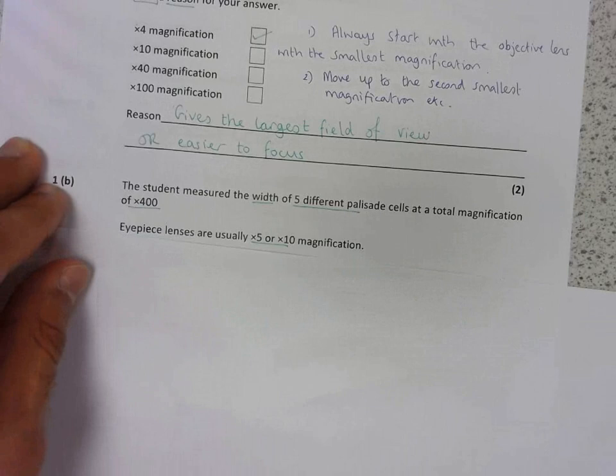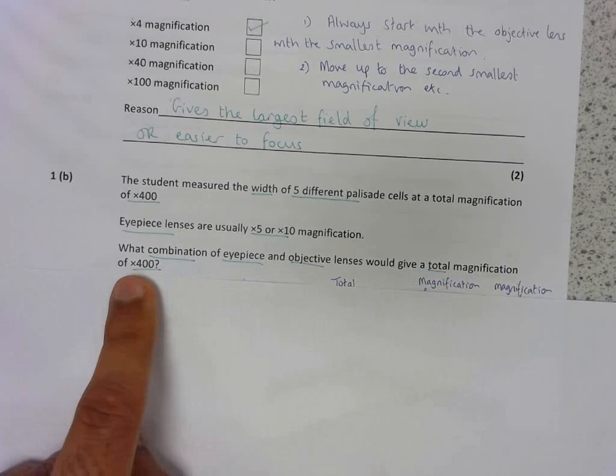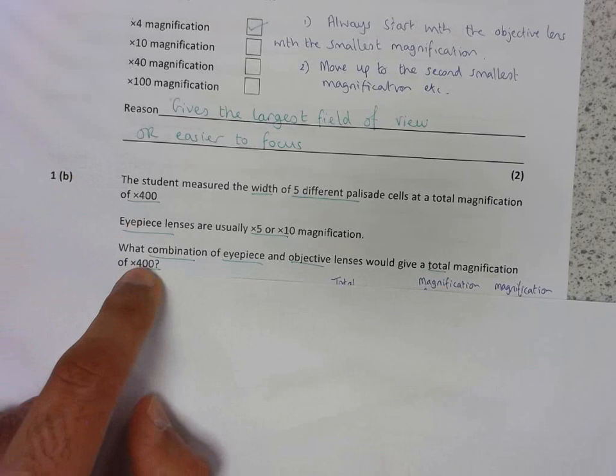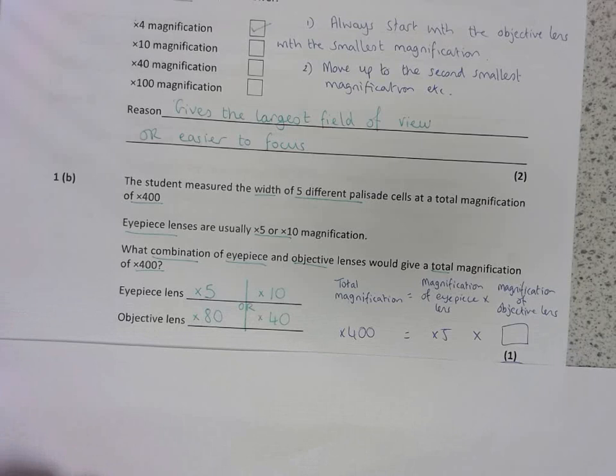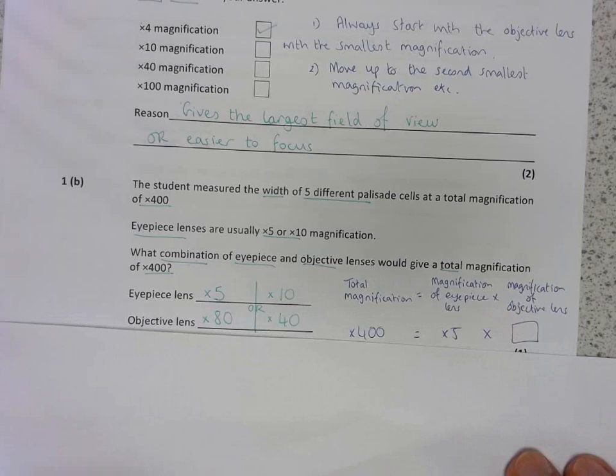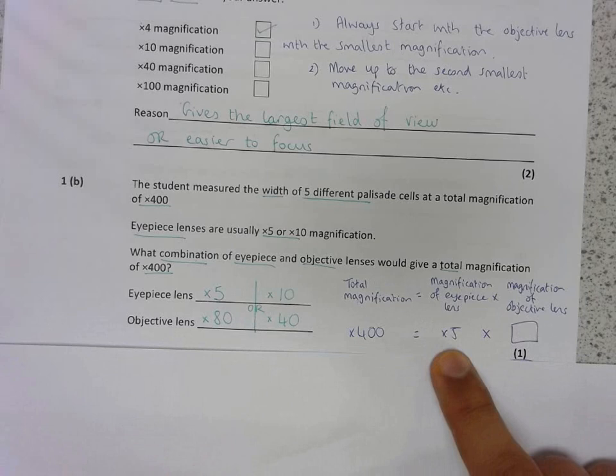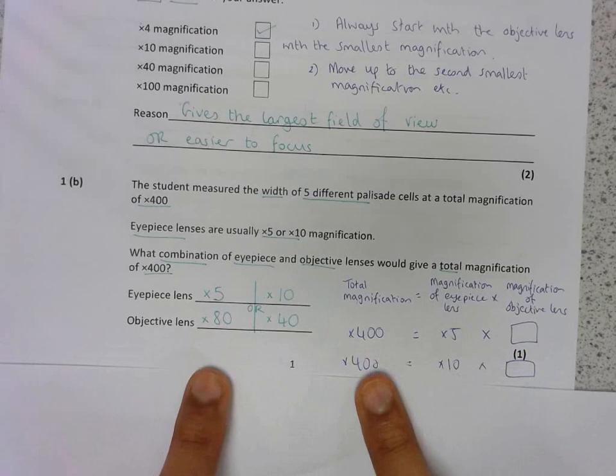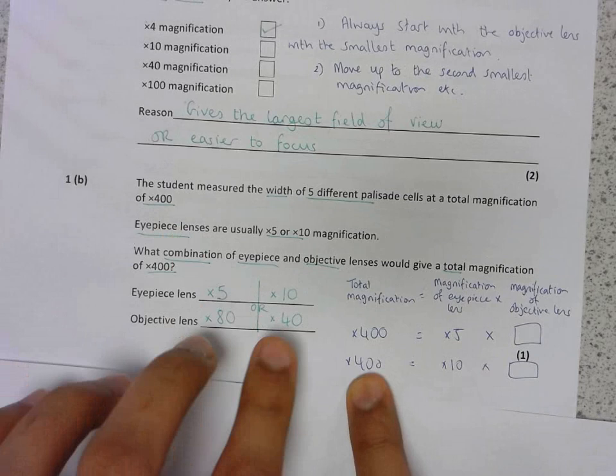The next question asks you to calculate the combination of eyepiece and objective lenses that would give the total magnification of 400. You are told the total magnification and you know what the eyepiece could be. So, you need to simply figure out which pair would give you 400 when multiplied together. The formula is total magnification equals magnification of eyepiece lens multiplied by the magnification of the objective lens. If you picked your magnification of eyepiece lens to be five times, then you know that your objective lens should be 80 times to give a 400 magnification. Or, if you picked 10 as your combination, then you need to pick 40 for your objective lens. Either one of these would be correct.